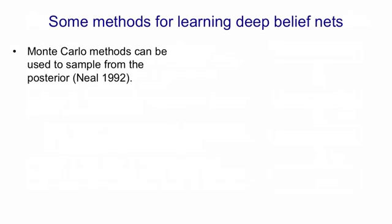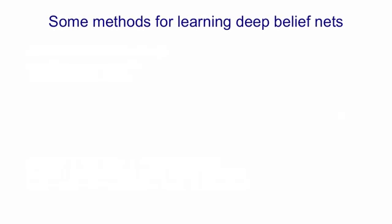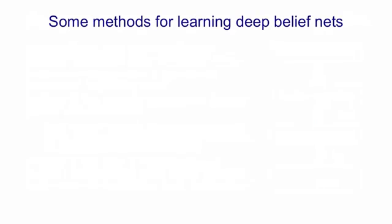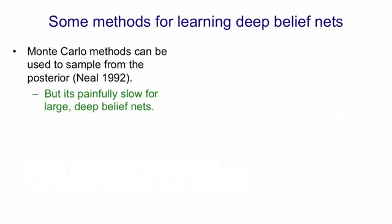So now we're going to consider some methods for learning deep belief nets. The first one is the Monte Carlo method used by Radford Neill, and that Monte Carlo method basically does all the work. That is, it considers patterns of activity over all the hidden variables, and it runs a Markov chain that takes a long time to settle down, given a data vector. And once it's settled down to thermal equilibrium, you get a sample from the posterior, but it's a lot of work. So in large, deep belief nets, this method's pretty slow.